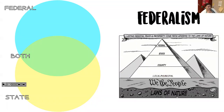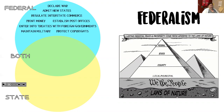Some things that are only unique to the federal government: the federal government can declare war. They can also admit new states. For example, we started off as 13 colonies, which were 13 states, and little by little through Manifest Destiny we have gained states. We saw this specifically in the Civil War unit, with many states coming in, whether they be slave states or free states.